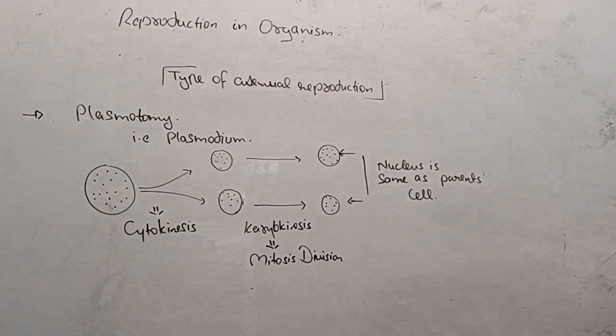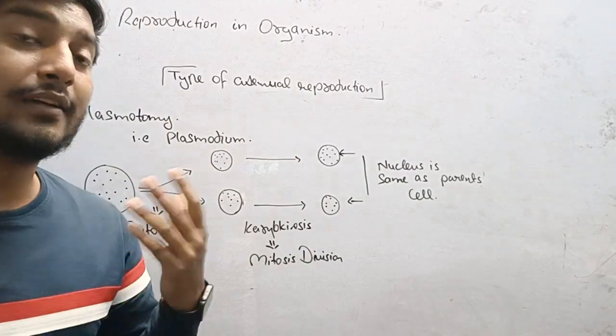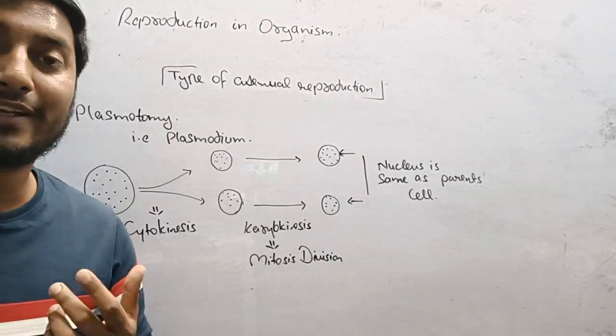This is known as plasmotomy. We are going to discuss another asexual process in the next lecture. Thank you.